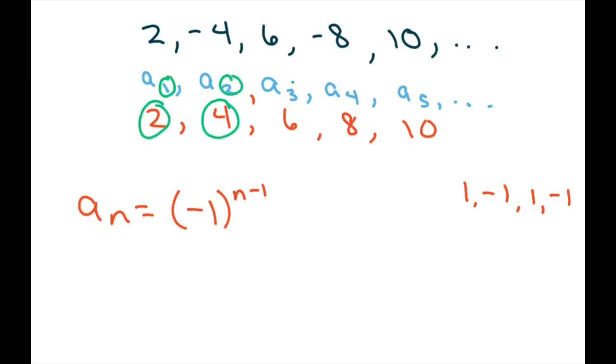So you look at the index numbers here and what I notice is that given the pattern, if I use this 1, then 1 times 2 is 2. So I can write this as 2 times 1, 2 times 2, 2 times 3, 2 times 4, and 2 times 5.